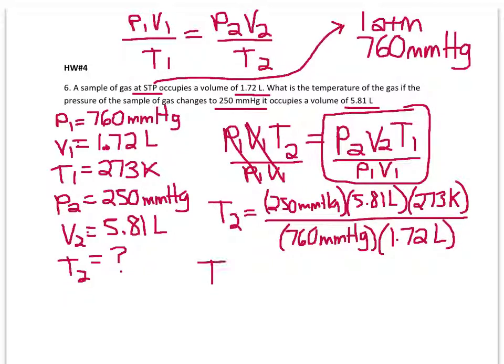So you multiply everything on top. So 250 times 5.81 times 273. Hit equals. Divide by 760.